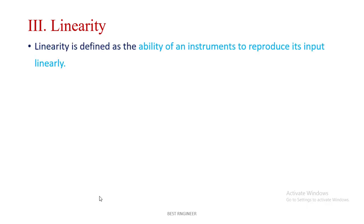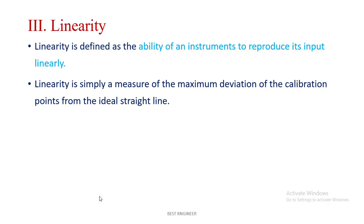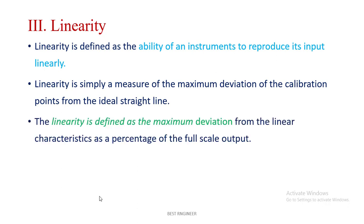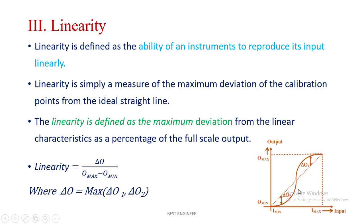Linearity is defined as the ability of an instrument to produce its output linearly. It is simply a measure of the maximum deviation of the calibration points from the ideal straight line, expressed as a percentage of the full-scale output. Looking at this picture, this one is the ideal line — the output varies with respect to the input — and this one is the real line. They will not coincide due to error. Linearity is calculated as Δo (maximum deviation of output) divided by the full-scale output difference.